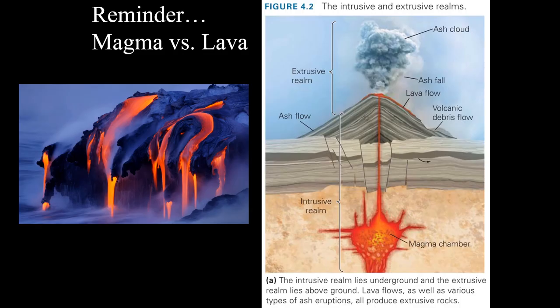The difference between magma and lava is where the liquid rock resides. Both terms refer to the molten state of a rock. If it's within the crust — the intrusive realm — we consider it magma, such as in a magma chamber below a volcano. When that molten rock reaches the surface and enters the extrusive realm, we call it lava. We call the flows of molten rock on the surface lava flows.